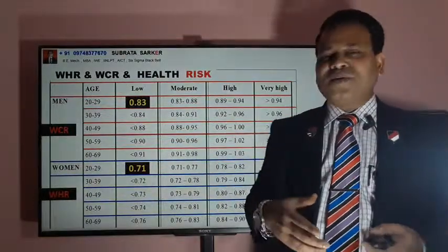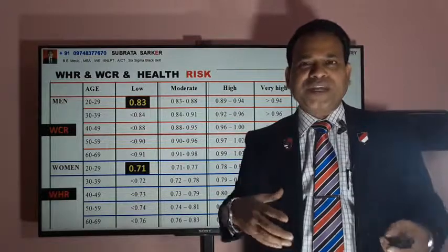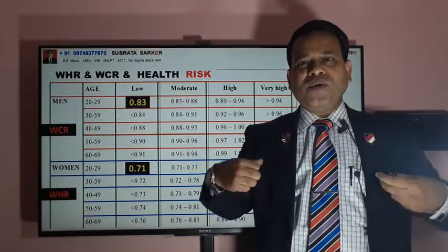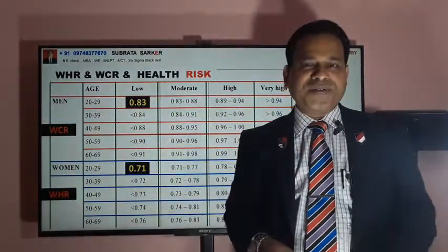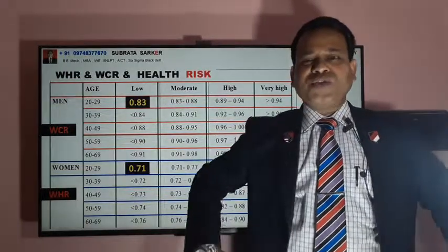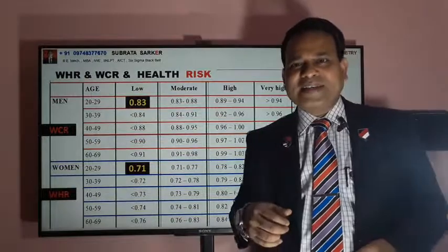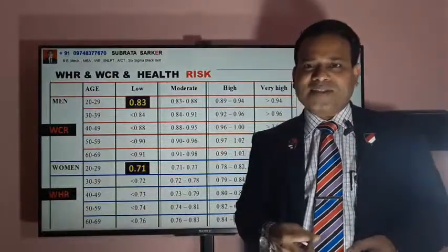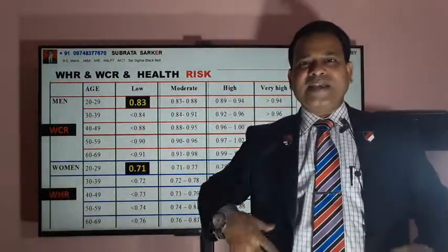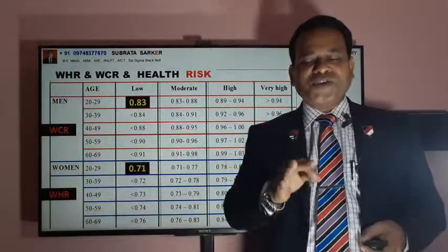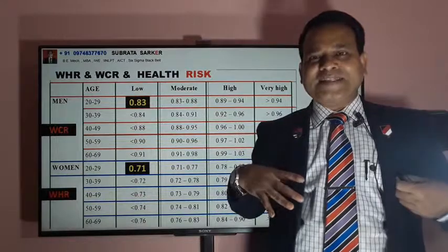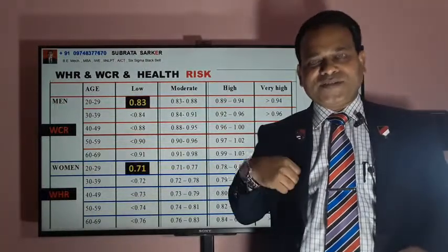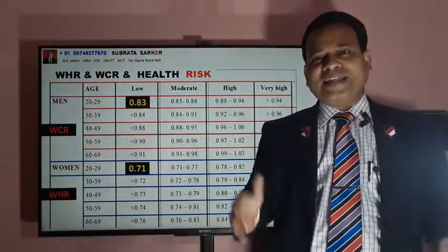Now there is WHR and WCR and health risk. WHR means waist to hip ratio; WCR means waist to chest ratio. For males, waist to chest ratio is important; waist to hip ratio is not as important. For females, waist to hip ratio is important — important from a health risk point of view, not from a physical appearance aspect. In simple terms, if your chest is 40 and your waist is 45, you are in a health risk zone. If your chest is 40 and your waist is 34, then it is good.